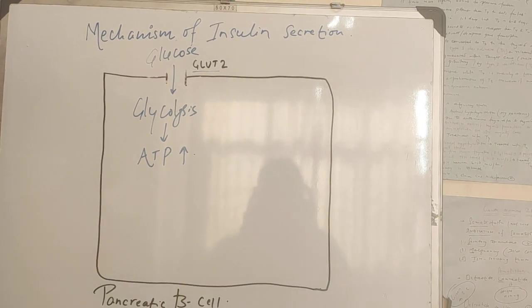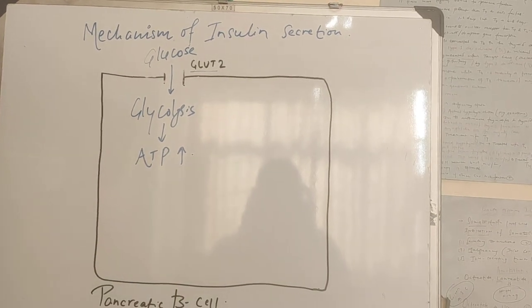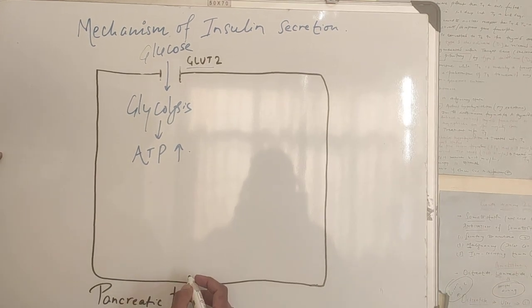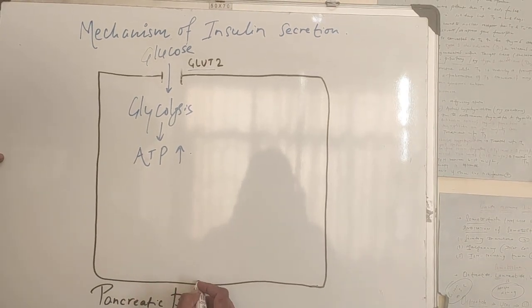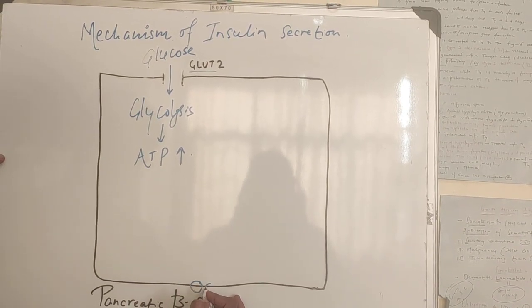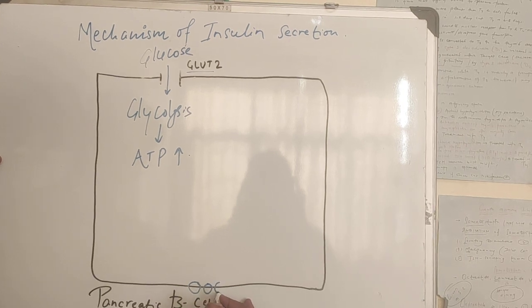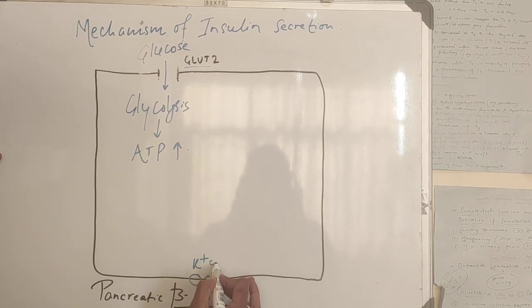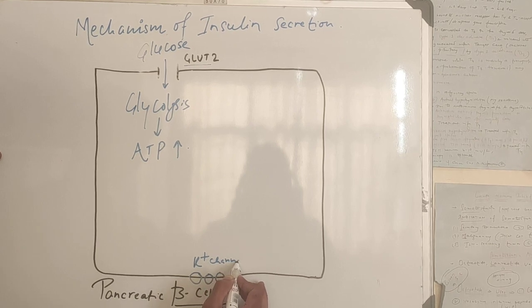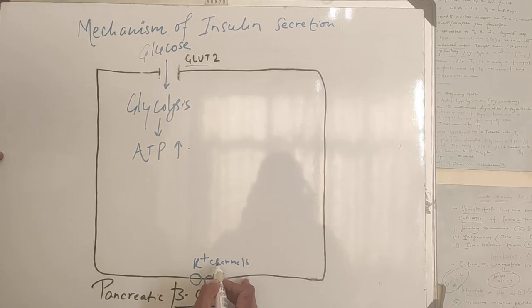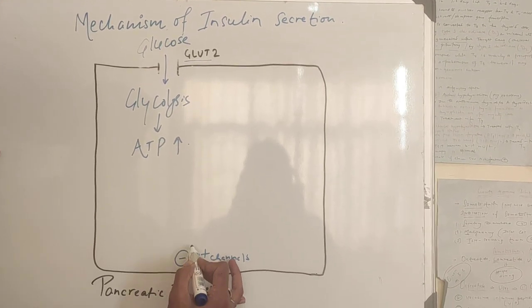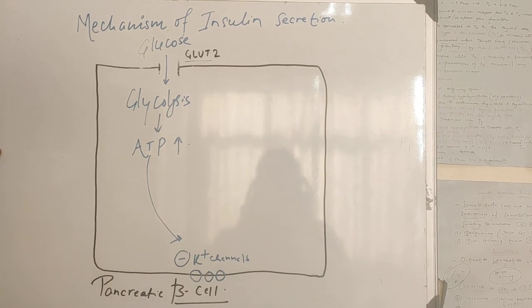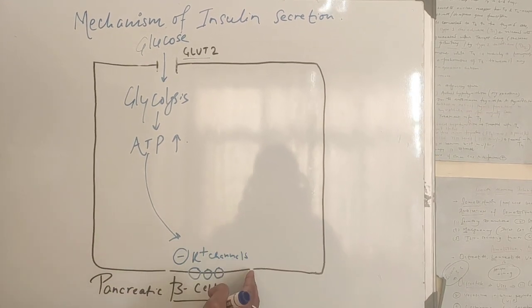This ATP is responsible for closure of ATP-sensitive potassium channels. Since these channels are closed, potassium cannot leak out of the cell.